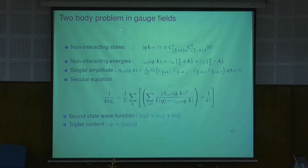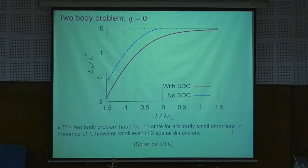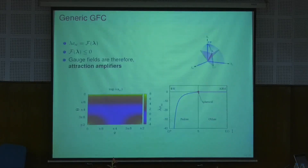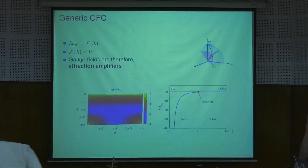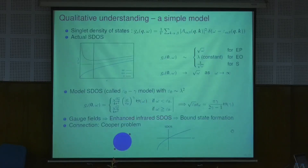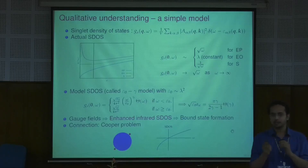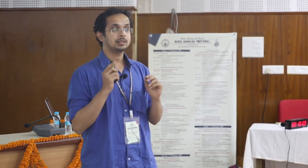In the two-body problem in gauge fields, you can formulate a secular equation where you find the energy of the state for a given scattering length. These results are not specific to spherical or symmetric coupling — we have shown that in general, for gauge coupling of any sort, it always amplifies the attraction and helps the formation of a bound state. The key quantity is the singlet density of states, and what matters is the nature of the singlet density of states at the band bottom.